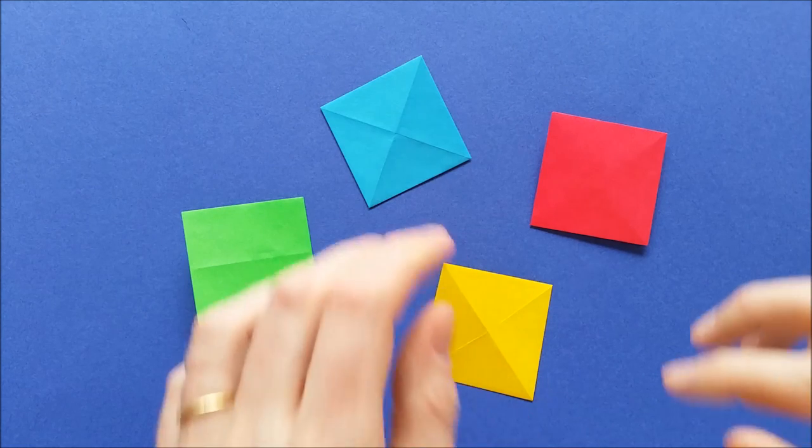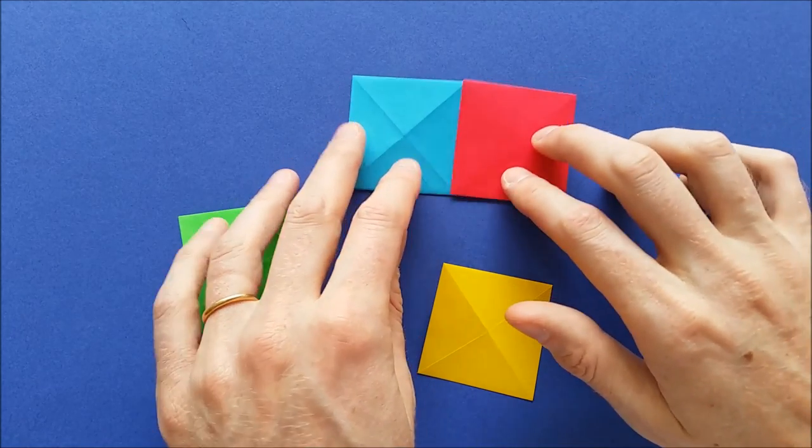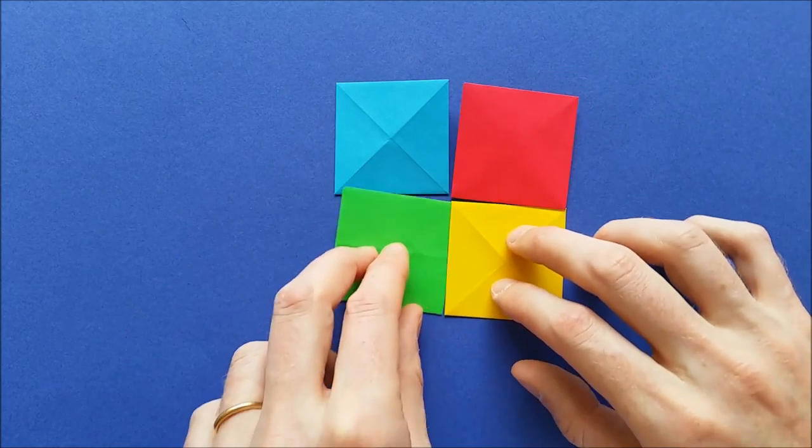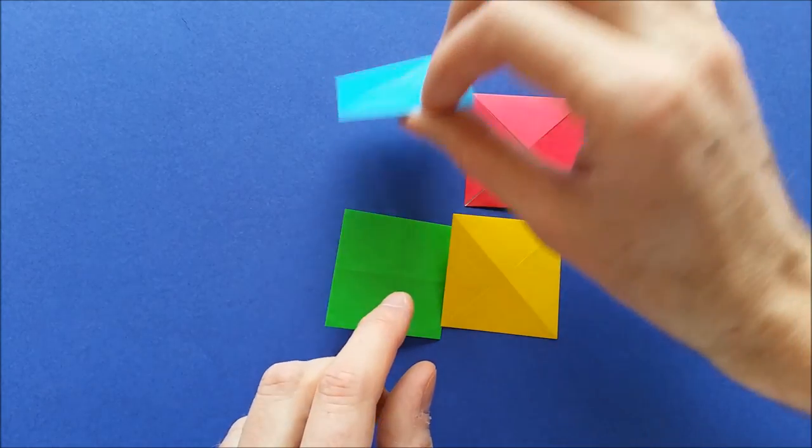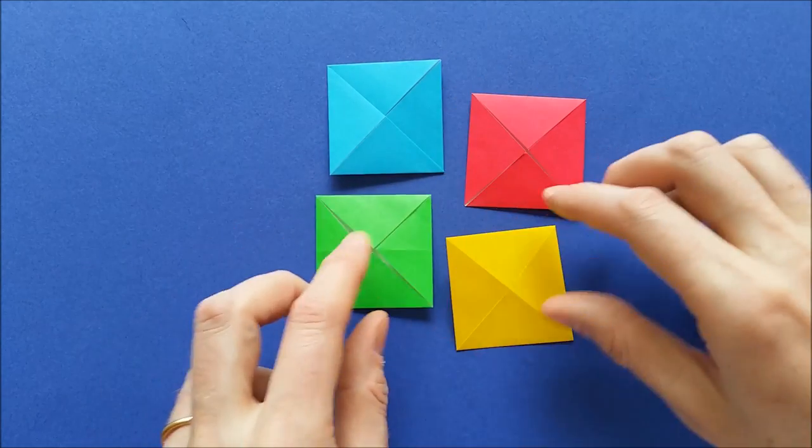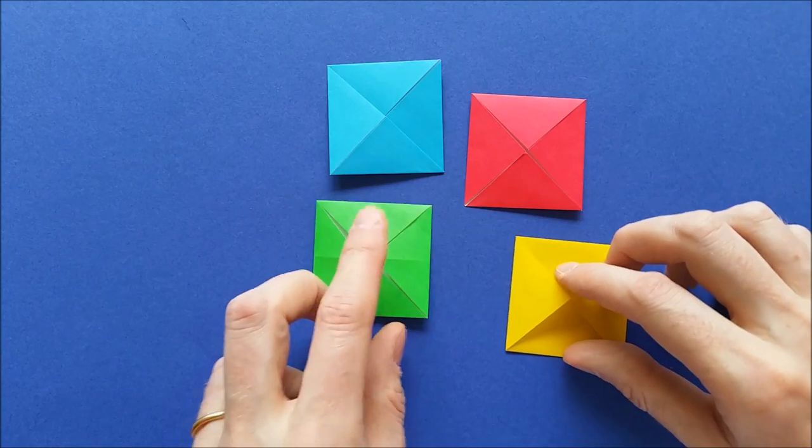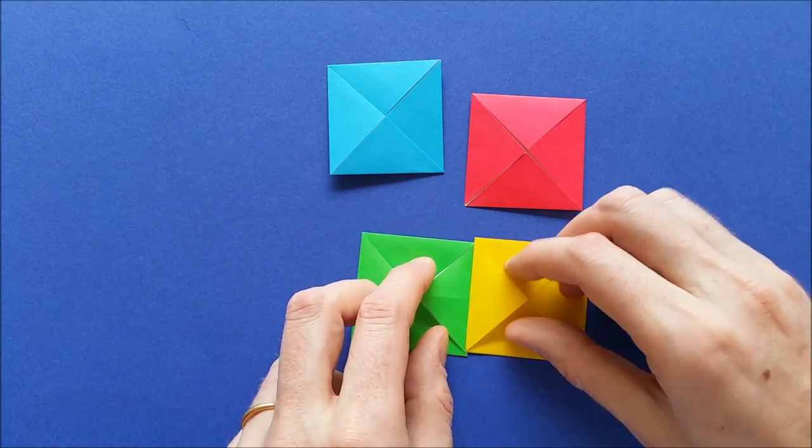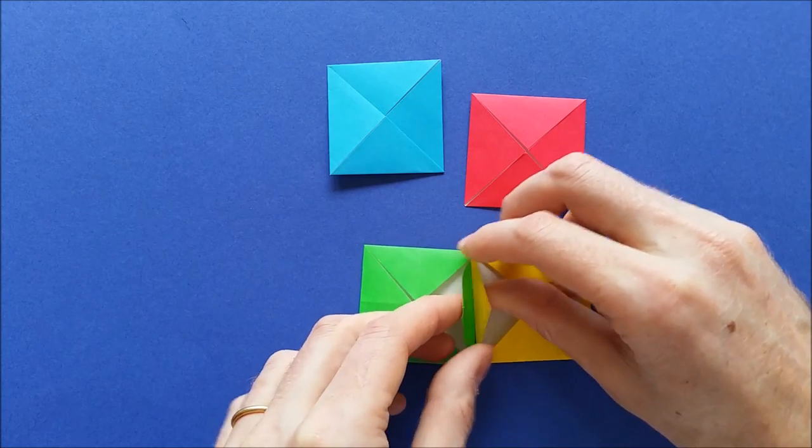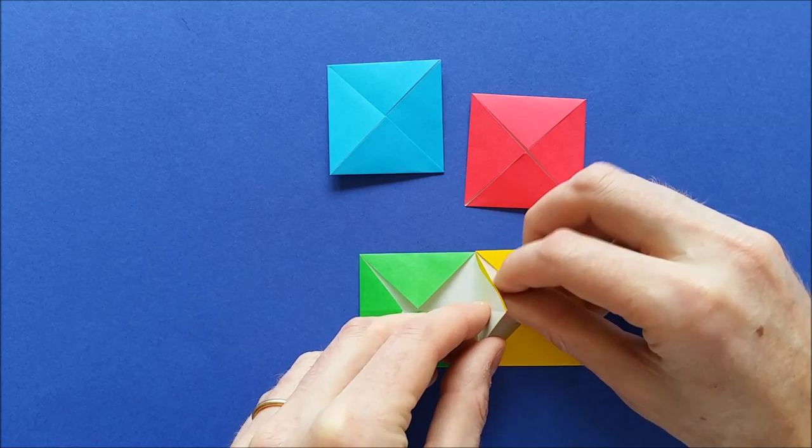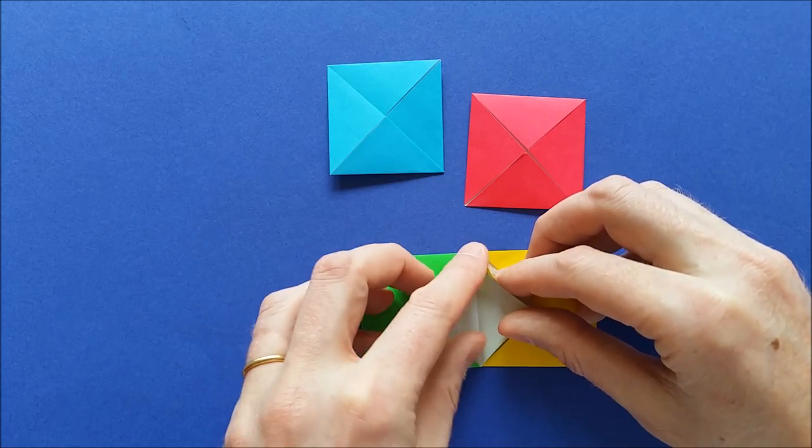Once you have made multiple pixels, you can join them together on their back. So turn the pixels to the other side. And to join two pixels, just put one next to another and lift the two triangular flaps. Then flatten the flaps on one side.